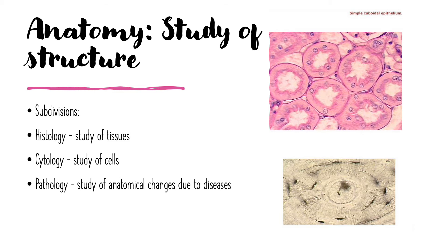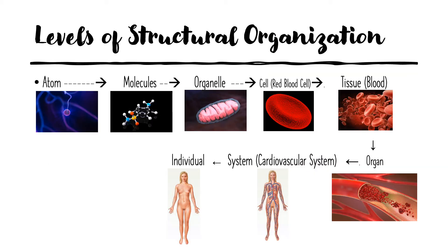Now we'll cover the levels of structural organization, building our way up to the individual level. The atom is the most basic unit — even more basic than the cell. A whole bunch of atoms come together to form molecules. A whole bunch of molecules come together to form an organelle. Here we're looking at a mitochondria. Organelles are essentially mini-organs found inside a cell.